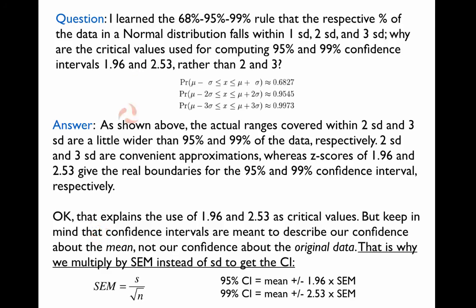Here's a question with respect to the idea of what percentage of the population falls within certain standard deviations of the mean. Question: I learned the 68%, 95%, 99% rule that the respective percent of the data in a normal distribution falls within one standard deviation, two standard deviations, three standard deviations. Why are the critical values used for computing the 95% and 99% confidence intervals 1.96 and 2.53 rather than 2 and 3?